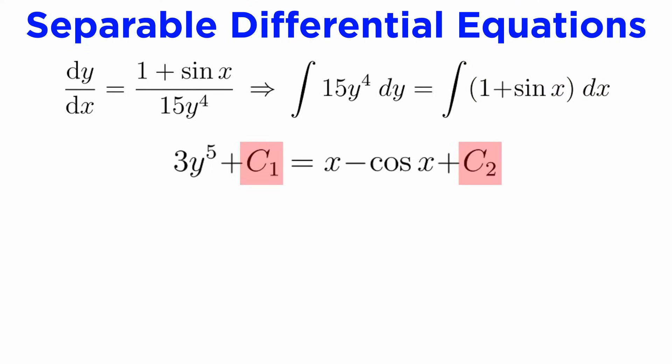Notice these two constants don't have to be equal, so we can't cancel them. Instead, what we can do is subtract c1 from both sides to get c2 minus c1 on the right hand side, and say that a constant minus a constant is just another constant, so we can let c equal c2 minus c1 and just put c on the right hand side.